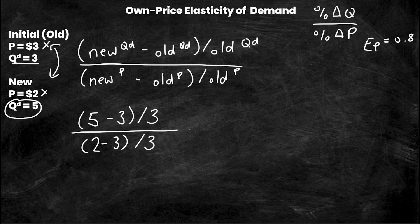Now I've got all these numbers here. I have 5 minus 3 equals 2 over 3, and then I have 2 minus 3 is negative 1 over 3. Now I need to divide these two fractions, so I'm going to multiply by the reciprocal. So 2 thirds times negative 3 over 1. 2 times negative 3 is negative 6, 3 times 1 is 3. This is equal to negative 2.